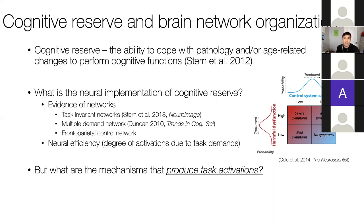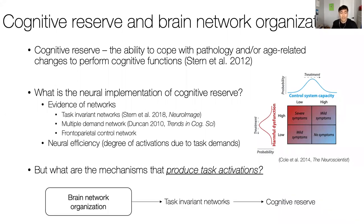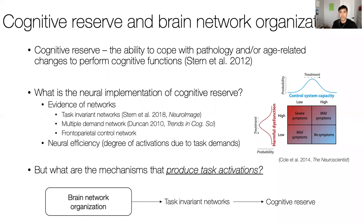What I want to share today is the idea that the network mechanisms that produce task activations likely lie in brain network organization. If the hypothesis is correct that task invariant networks correlate with cognitive reserve, it's likely that brain network organization may actually mediate differences in task invariant networks or their manifestation.